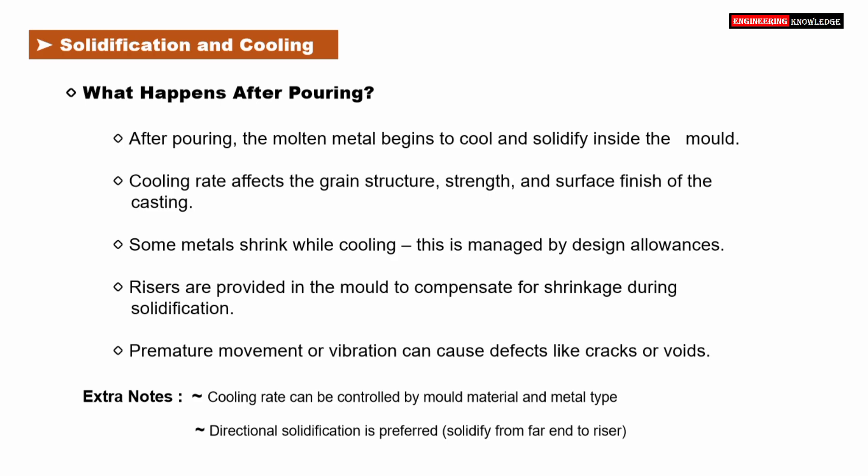Once the metal is poured, the next critical stage is solidification and cooling. The molten metal gradually cools down inside the mold and begins to solidify. The cooling rate plays a major role — it affects the grain structure, strength, and surface finish of the final casting. Many metals tend to shrink during cooling. To handle this, design allowances are used. Risers are added in the mold to compensate for shrinkage during solidification.